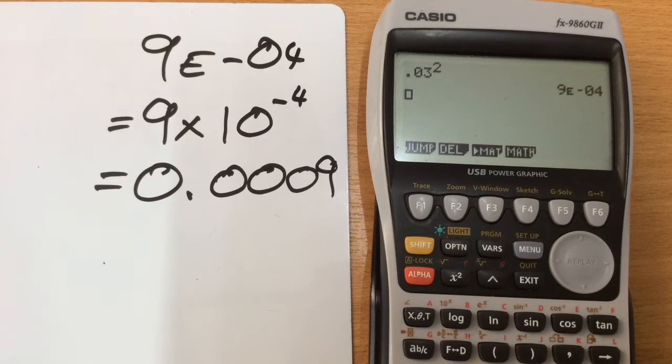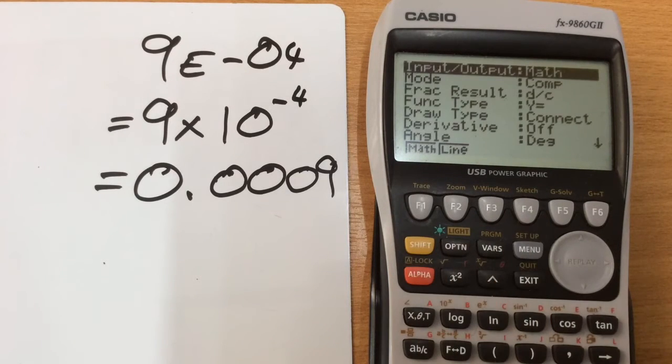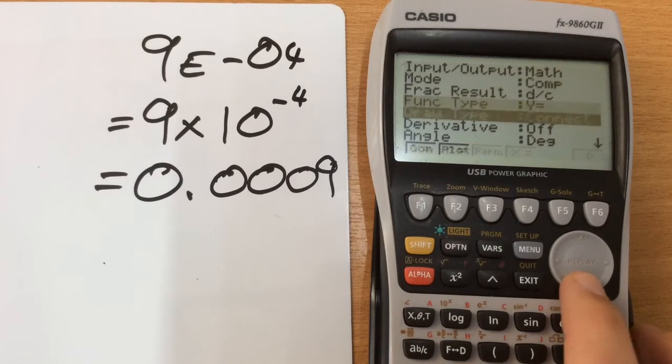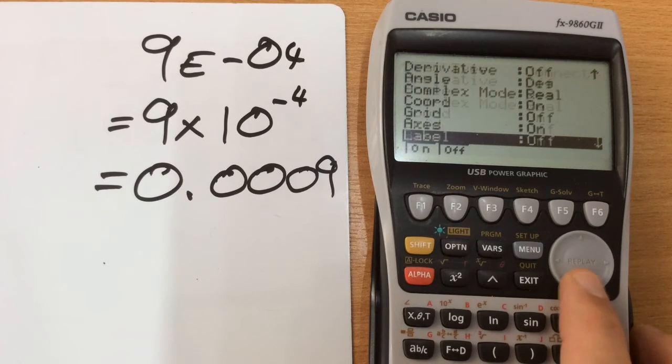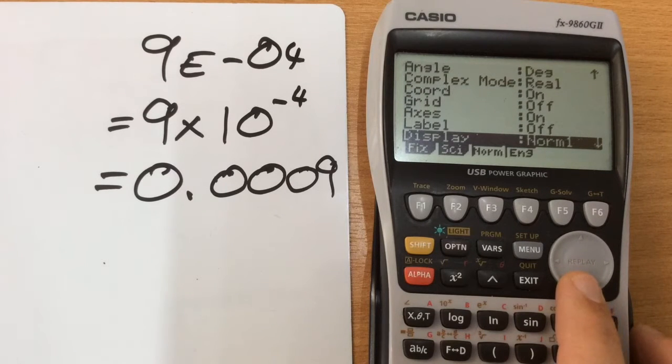Thankfully there is a way around this. If we go into the setup which appears above the menu, so shift and setup, here we've got all the different ways that we can change how it's representing numbers. We need to run all the way down, very near the bottom until we get to display.